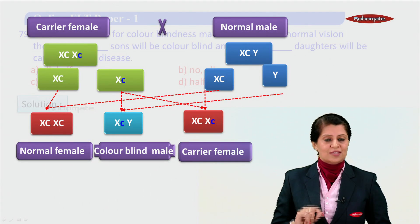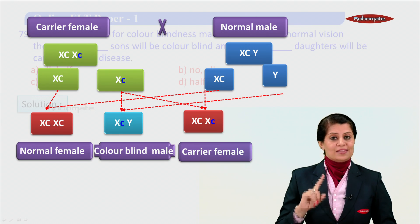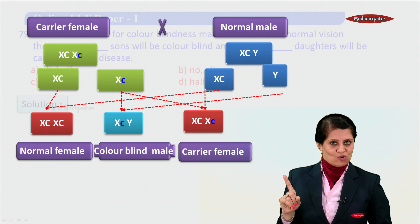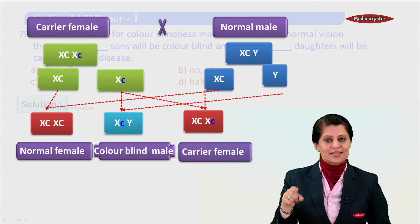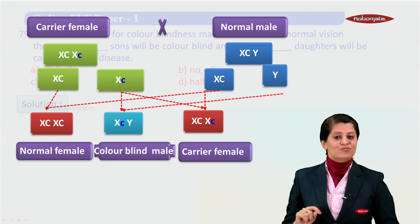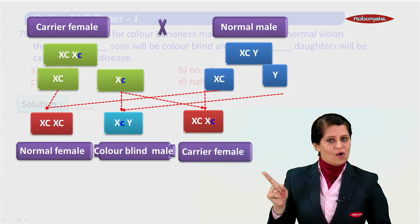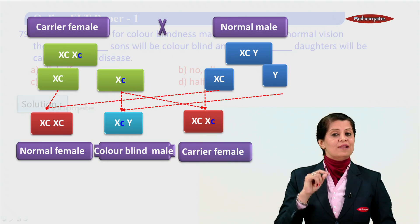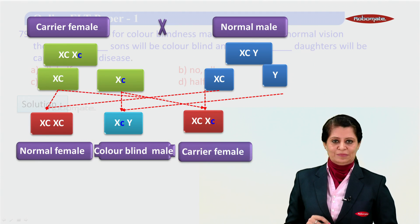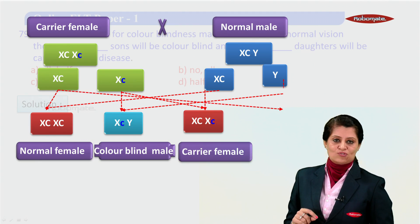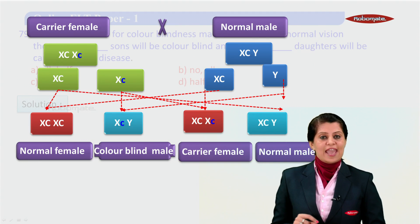Another combination: we will have X^C and X^c. Although in this female the disease gene is present, she has another X chromosome which has got the dominant gene, and that will mask the disease gene. That means this female is a carrier but will not be colorblind — she is simply called a carrier female.